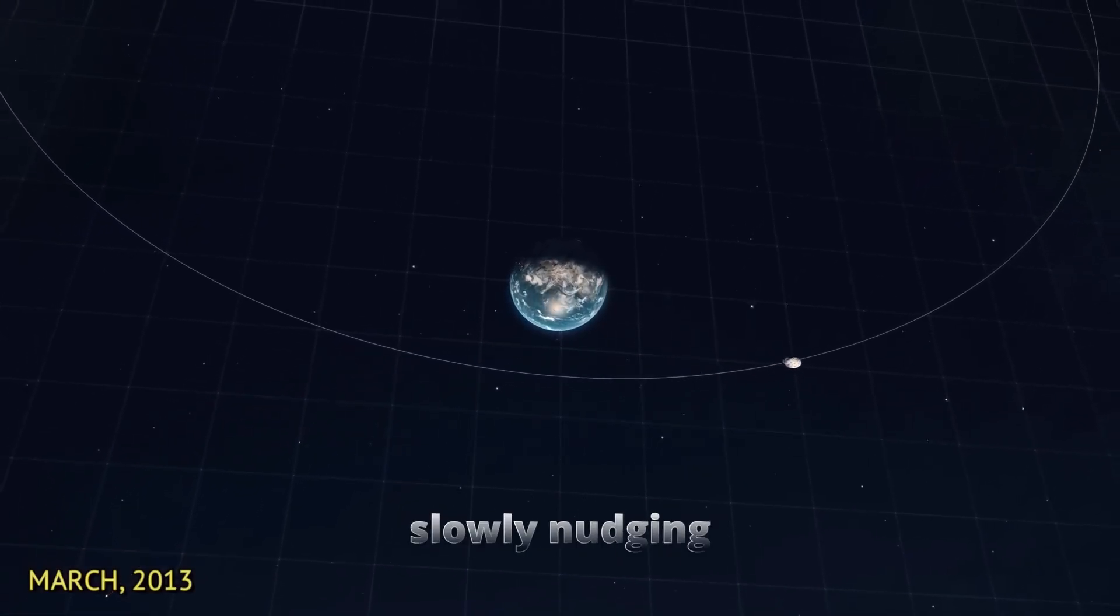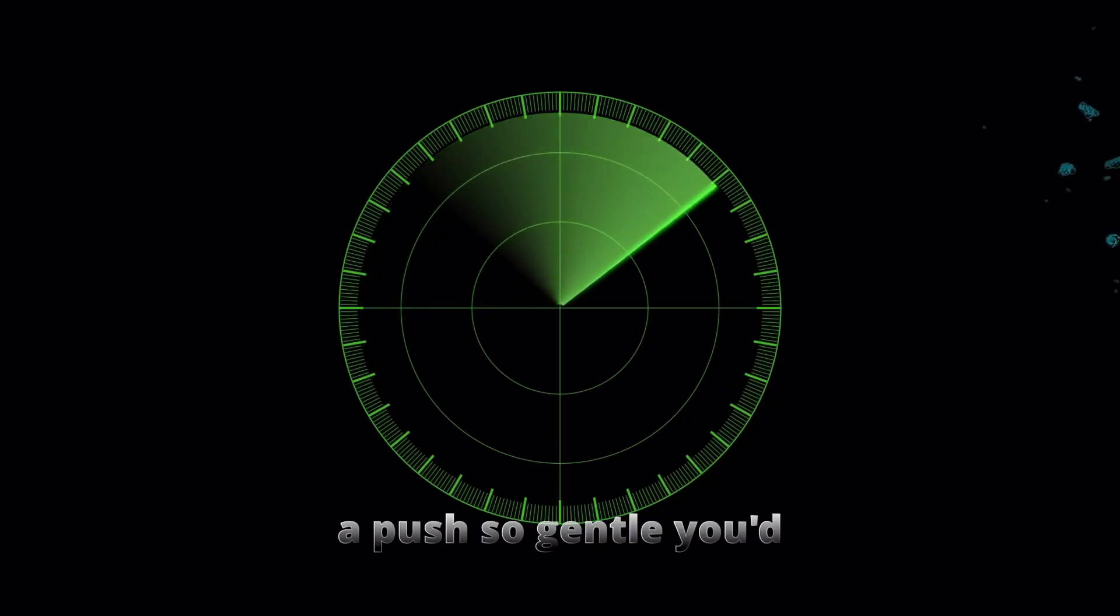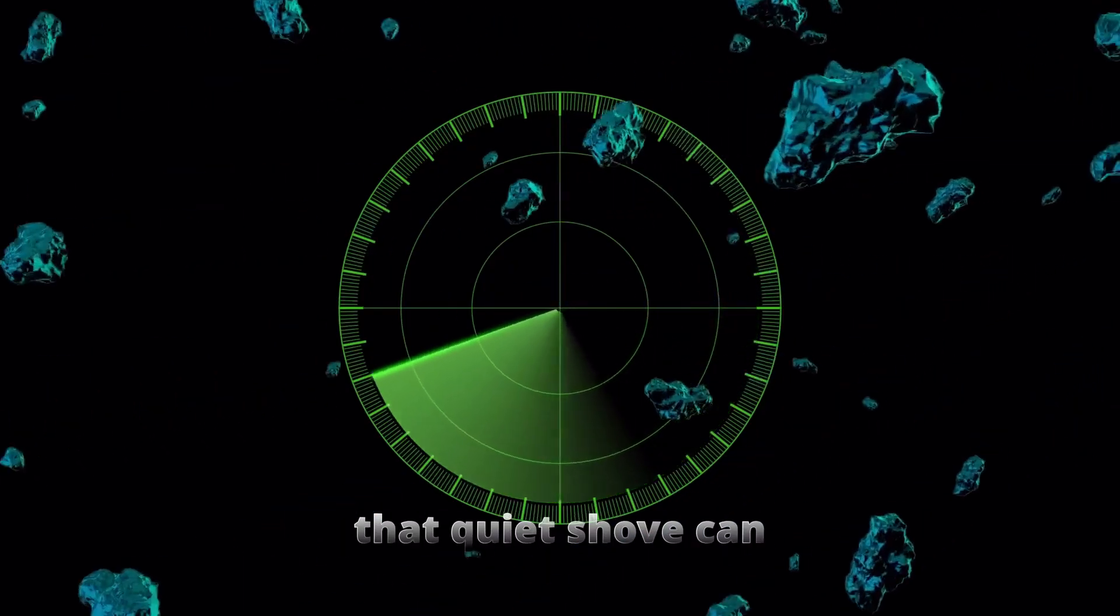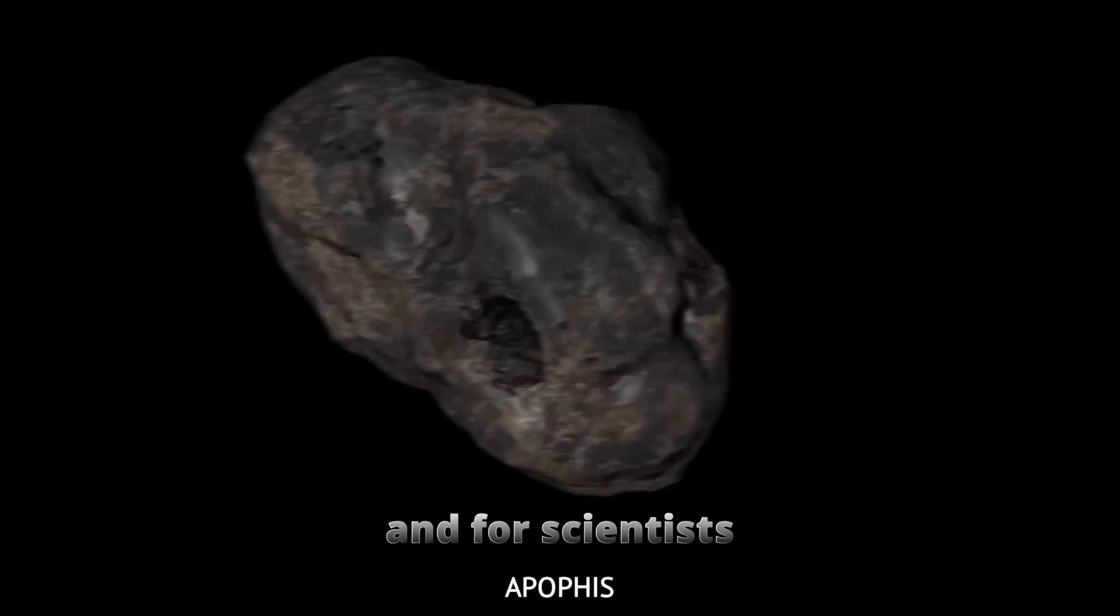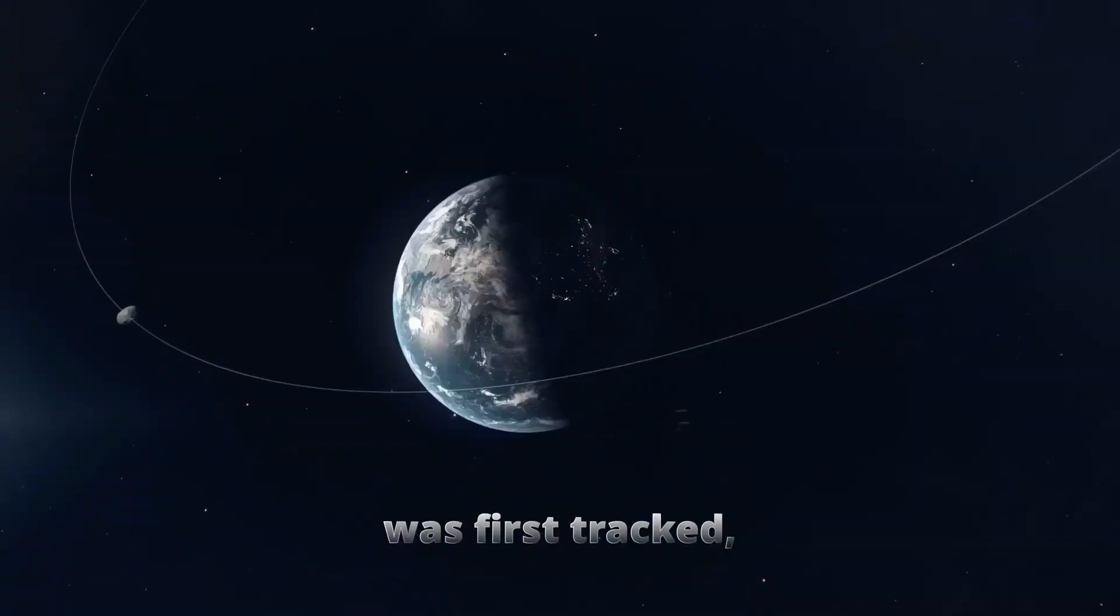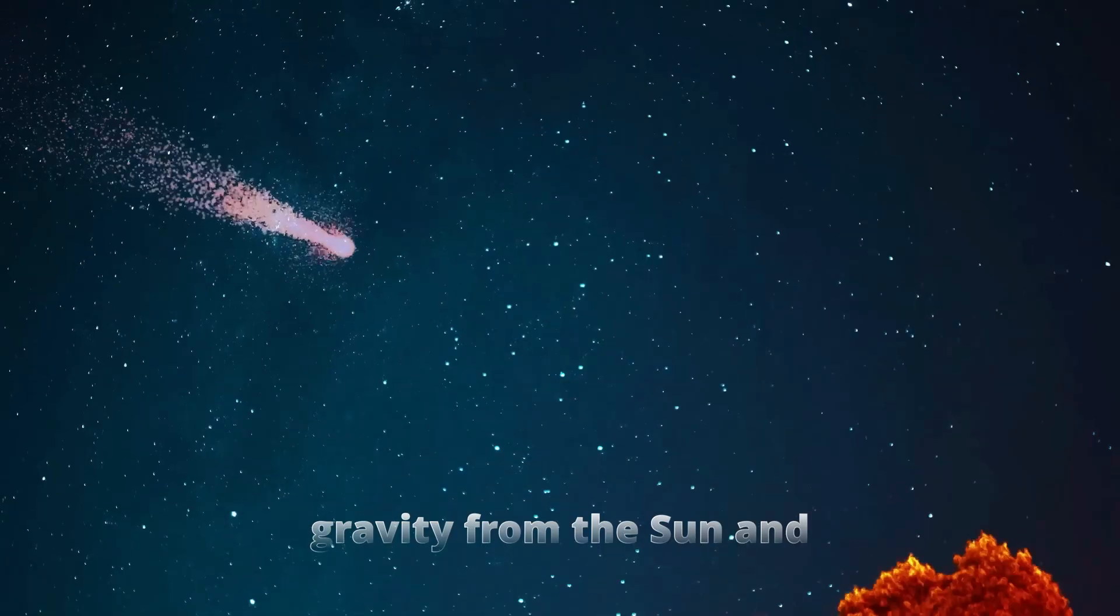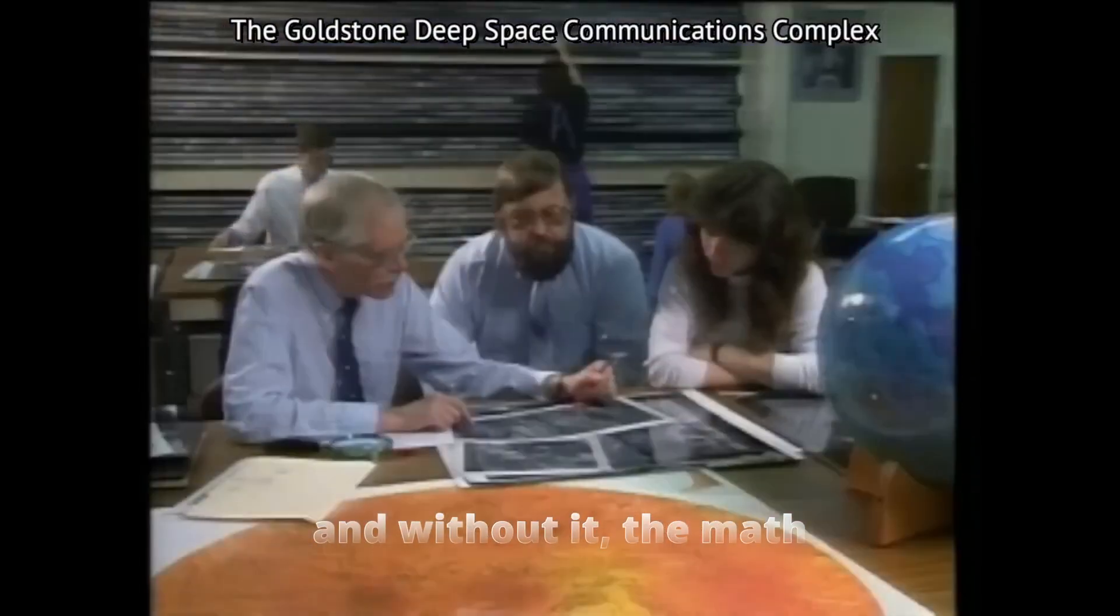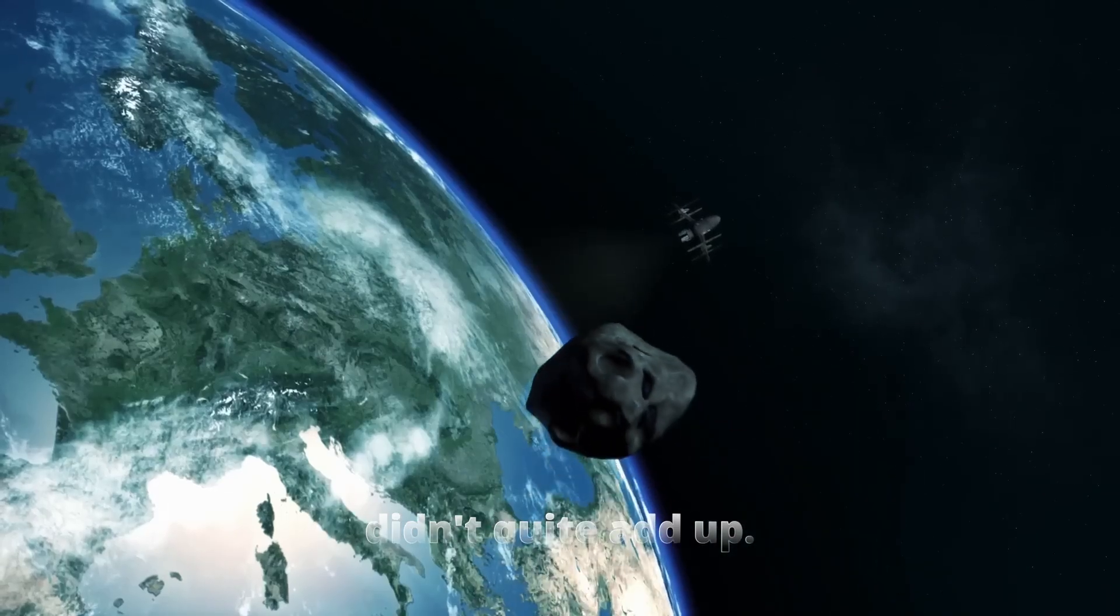Imagine sunlight slowly nudging a rock through space, a push so gentle you'd never notice it from one day to the next. Yet over decades that quiet shove can shift an asteroid's path by thousands of kilometers. This is the Yarkovsky effect, and for scientists studying Apophis, it turned out to be one of the trickiest variables to measure. When the asteroid was first tracked, gravity from the sun and planets explained much of its motion, but some tiny, persistent force was still unaccounted for. And without it, the math didn't quite add up.